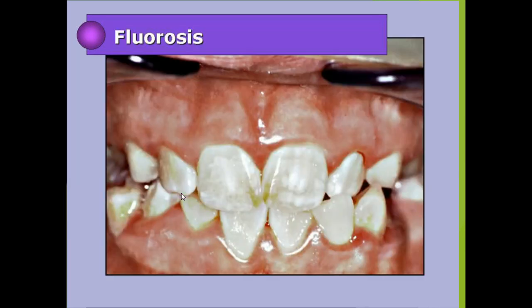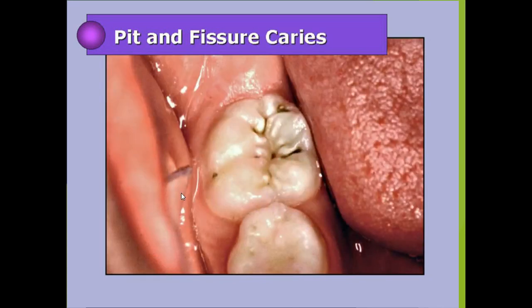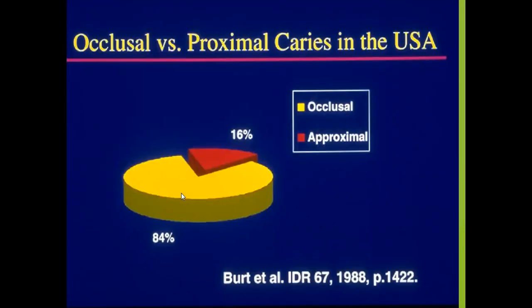This is the classic picture of fluorosis. Now we will discuss about pit and fissure caries and pit and fissure sealants. This is a very important graph — in the USA, there are 84% occlusal caries and just 16% proximal caries.